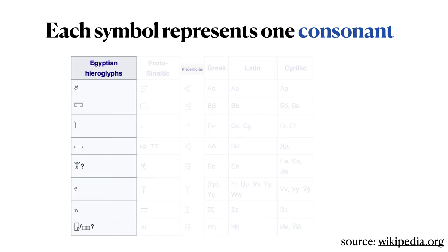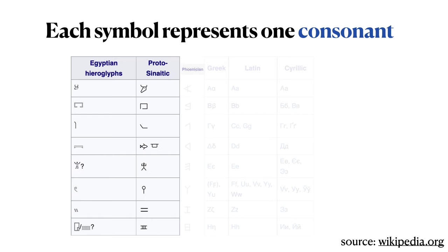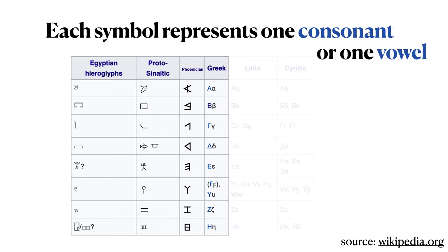These tables are taken from Wikipedia. In the first column, we see ancient Egyptian hieroglyphs, which led to the later development of the Proto-Sinaitic abjad, with symbols shown here. Note that most of these symbols are quite close to the original hieroglyphs. From Proto-Sinaitic came more abstracted versions of Phoenician symbols, also an abjad. The Phoenician abjad led to the development of the Greek alphabet, where explicit vowel symbols were added, including alpha, which we see here as the first Greek letter.